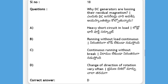Why do DC generators lose their residual magnetism? Options: heavy short-circuit in load, running without load continuously, continuous running without break, change of direction of rotation very often. The answer is D, change of direction of rotation very often.